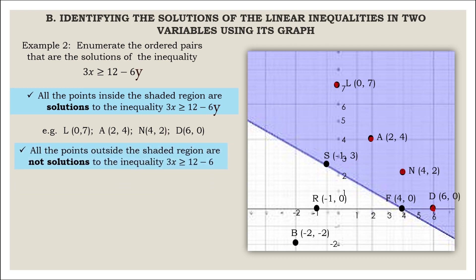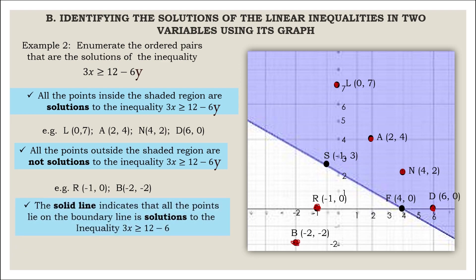All the points outside the shaded region are not solutions to the inequality 3x greater than or equal to 12 minus 6y. Examples: Point R and Point B. The solid line indicates that all the points lying on the boundary line are solutions to the inequality 3x greater than or equal to 12 minus 6y. Examples: Point S and Point F.